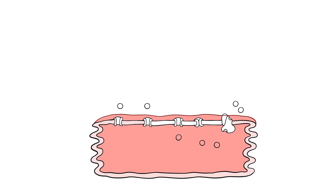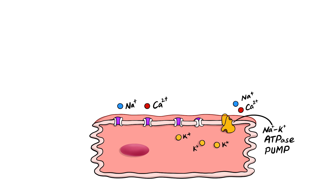First, let's discuss the physiology of cardiac action potential in short. Here I am drawing a myocardial cell with multiple ion channels. The resting membrane potential in a myocardial cell is minus 90 mV. Depolarization begins with the opening of sodium channels, and the rise of action potential is phase 0.